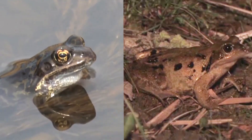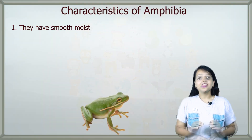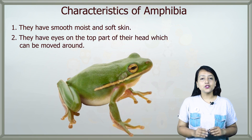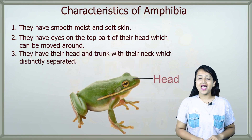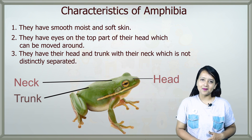Now let's talk about amphibians. The word amphibian means both kinds of life — animals that spend part of their lives in water and part on land. Other characteristics of the class amphibians are: the animals of this group have smooth, moist and soft skin. They have eyes on the top part of the head which can be moved around. They have the head and trunk with no neck that is distinctly separated.